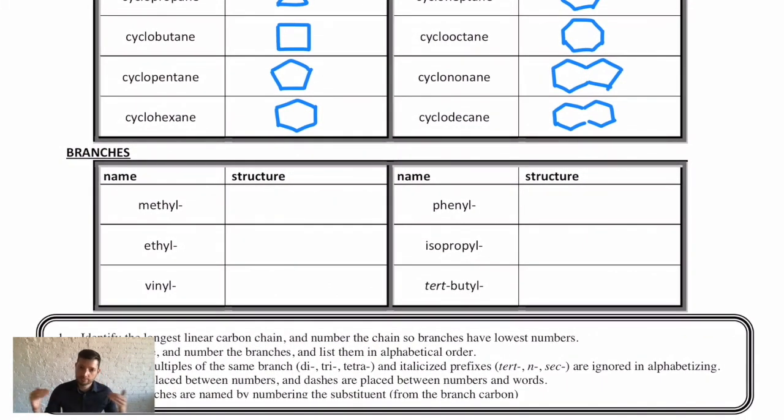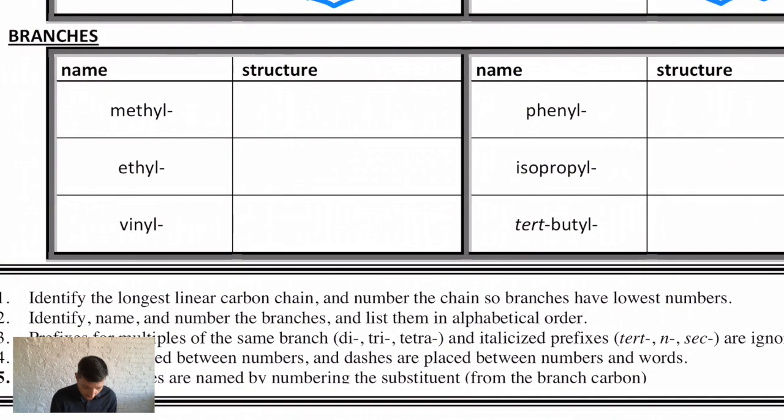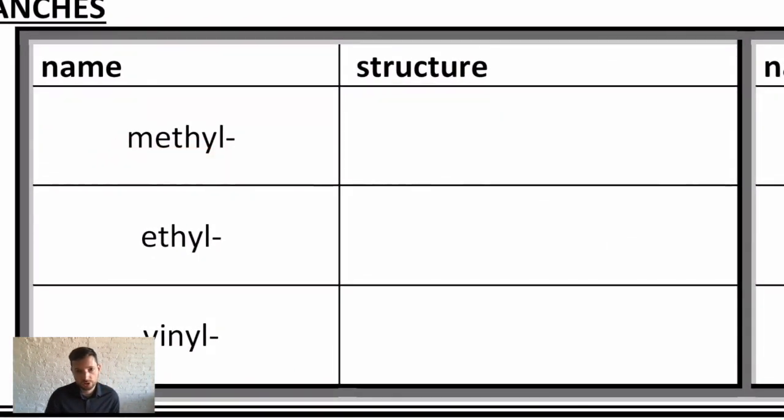Now, what if we put alkyl branches on either a ring or a carbon chain? Branches are named in the same way that the parent chain is named, with the prefix denoting the number of carbons in the branch. So a methyl is one hydrogen shy of methane, so it would be a CH3 group, often abbreviated as Me.